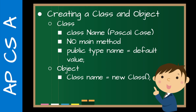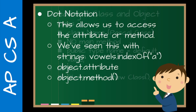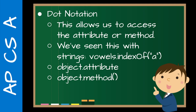To create an object in another class you need two classes: class name equals new class. Dot notation is the specific terminology that allows us to access an attribute or method, and we've already seen this with strings. Throughout the course, I try to introduce an idea and come back to it over and over again, building skills piece by piece. For example: vowels dot indexOf('a') — indexOf is our method, 'a' is the parameter. So the idea is object dot attribute or object dot method — that's dot notation.